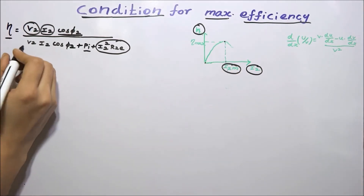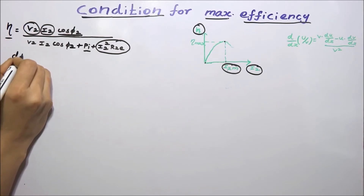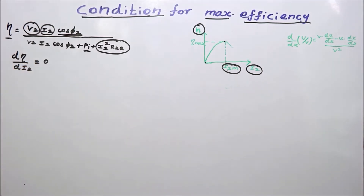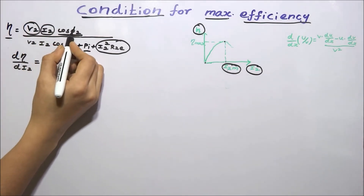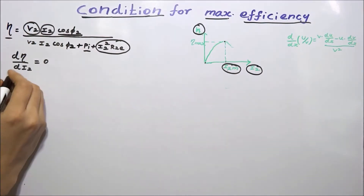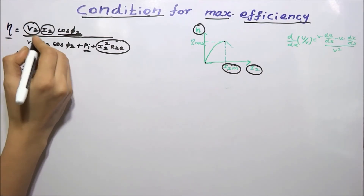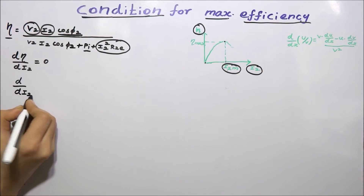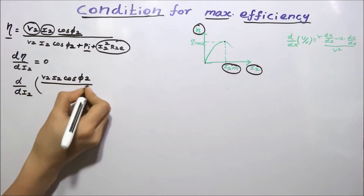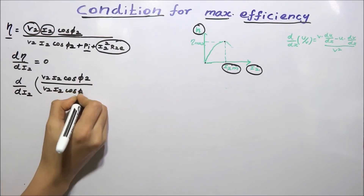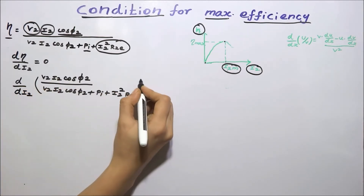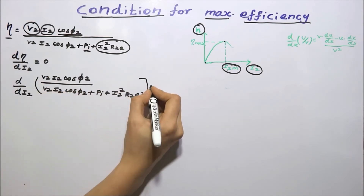To obtain the maximum efficiency, we differentiate the efficiency equation with respect to I2 and equate it to 0. Since terminal voltage V2 and power factor cos(φ2) are constant parameters, only the efficiency varies with respect to I2. The efficiency formula is V2·I2·cos(φ2) divided by V2·I2·cos(φ2) plus iron loss Pi plus copper loss I2²·R2E, and we differentiate this and equate to 0.